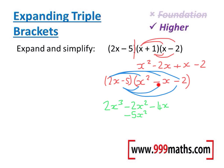We've then got minus 5 times by minus x, which turns into plus 5x. And finally, we've got minus 5 times by minus 2, which will be plus 10.